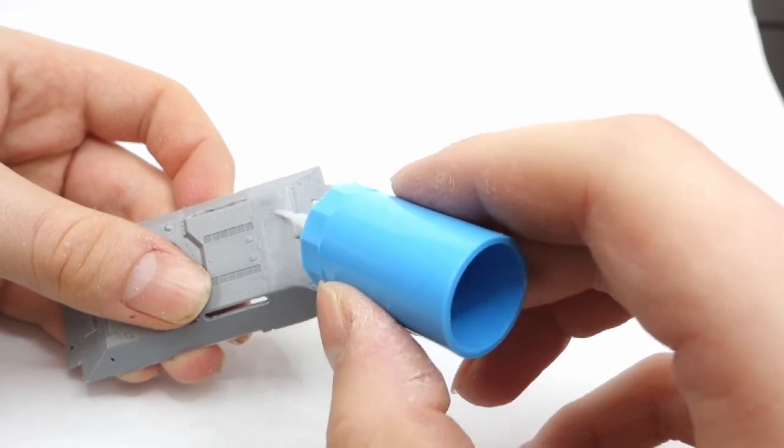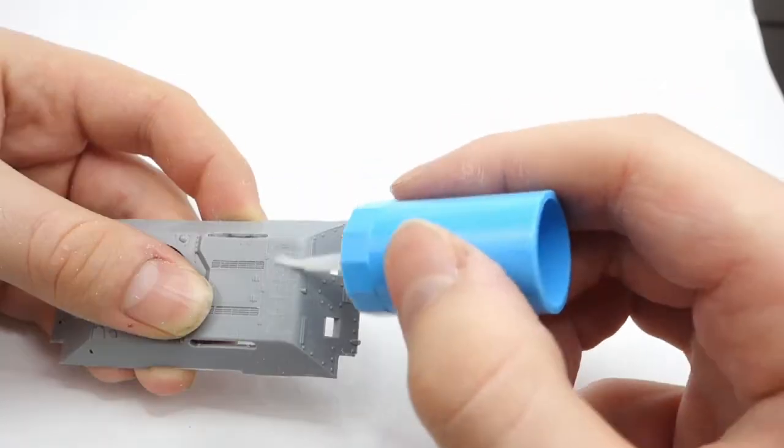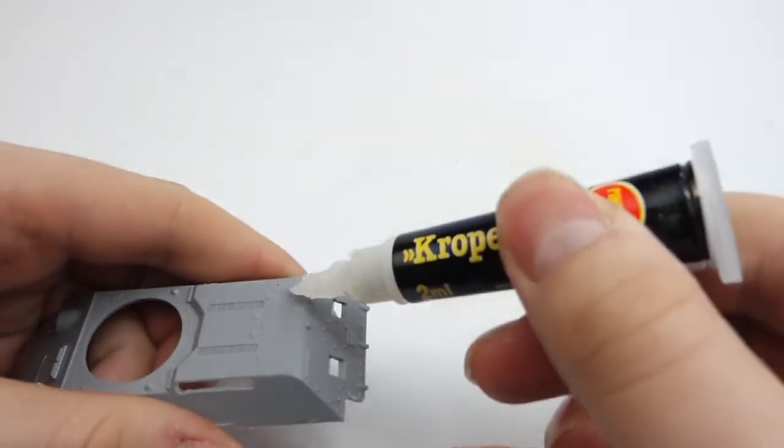After that I used Mr. Cement S to smoothen the surface and remove all the plastic dust which was created during sanding.